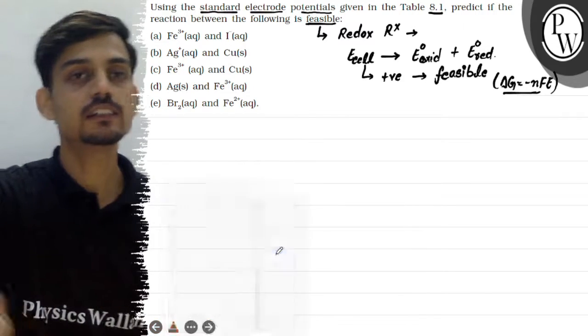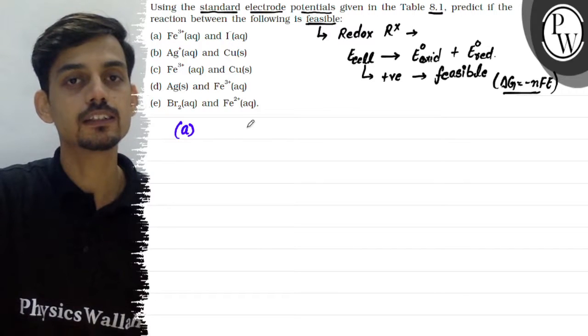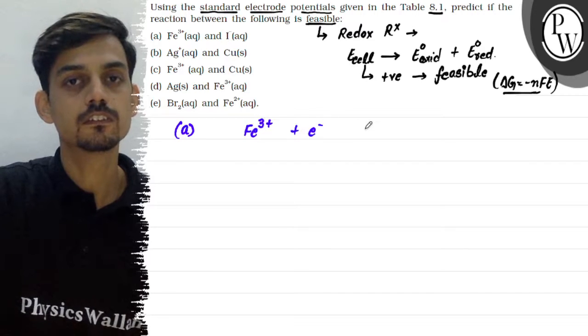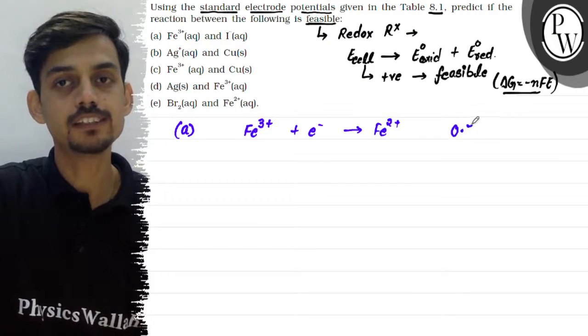First pair ko dekhe. First pair hai Fe3+ and iodine minus. So Fe3+ will be reduced into Fe2+. So this is our reduction potential which is 0.77 volt.